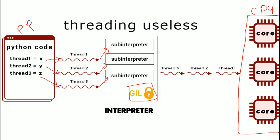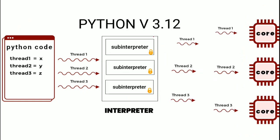When the first sub-interpreter starts using the shared data, the GIL locks the interpreter until it finishes. Then it unlocks the GIL, and the second sub-interpreter uses the shared data, and so on. In true parallel programming, all sub-interpreters would use shared data simultaneously. Instead, threads finish one by one, meaning the CPU cores do not execute all three threads at the same time.